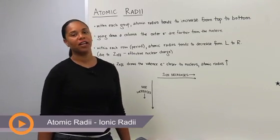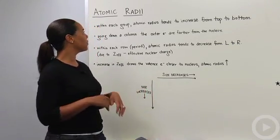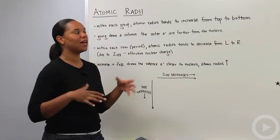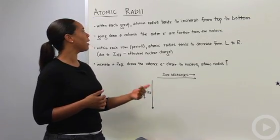Let's go ahead and talk about some periodic trends that we can gather from the periodic table. So let's start with atomic radii as that's a little bit simpler, and then we'll move into talking about ionic radii.